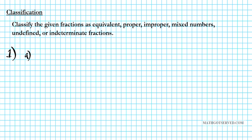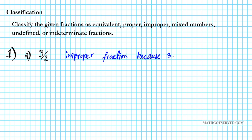1a: what if we have the fraction 3 over 2? What kind of fraction is this? This right here is an improper fraction. Why is it an improper fraction? It's an improper fraction because the numerator 3 is greater than the denominator 2.